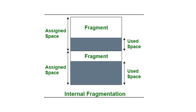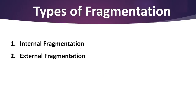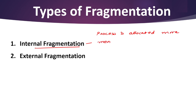We have two types of fragmentation: internal and external. Whenever we talk about internal fragmentation, this problem occurs when a process is allocated more memory than it wants, and the free space is left unused.